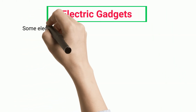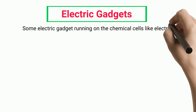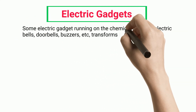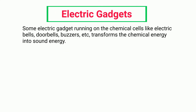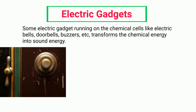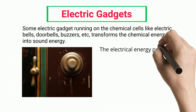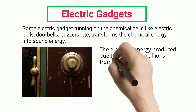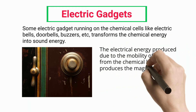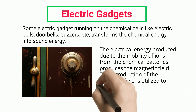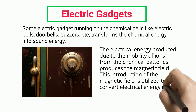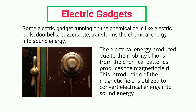Electric gadgets: some electric gadgets running on chemical cells, like electric bells, doorbells, and buzzers, transform chemical energy into sound energy. The electrical energy produced due to the mobility of ions from chemical batteries produces a magnetic field. This magnetic field is utilized to convert electrical energy into sound energy.